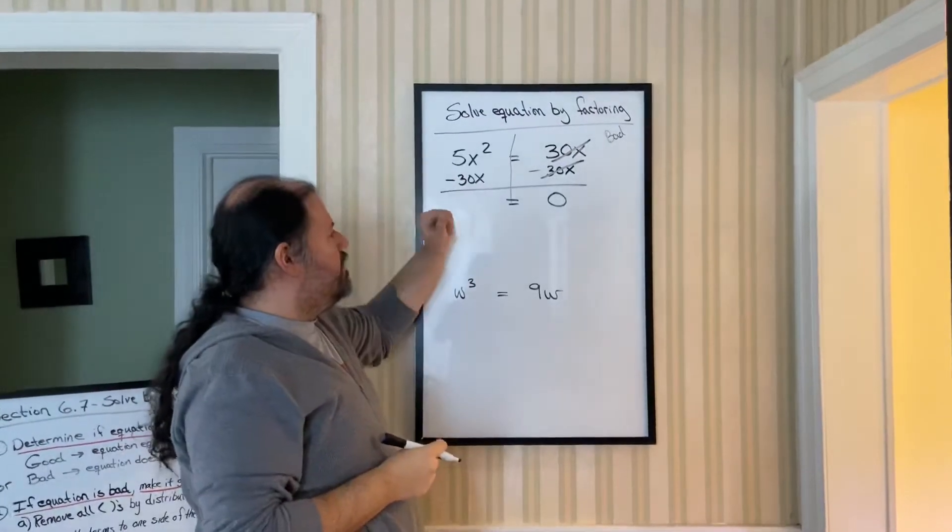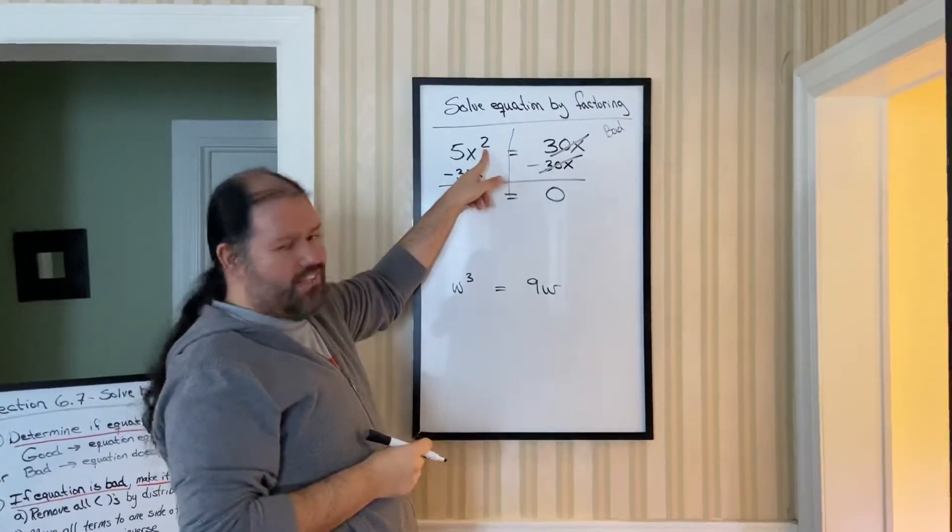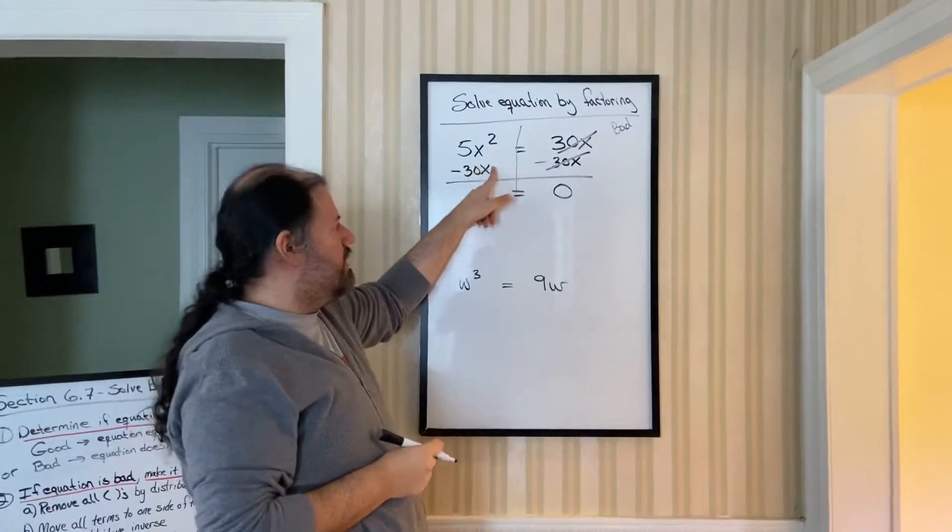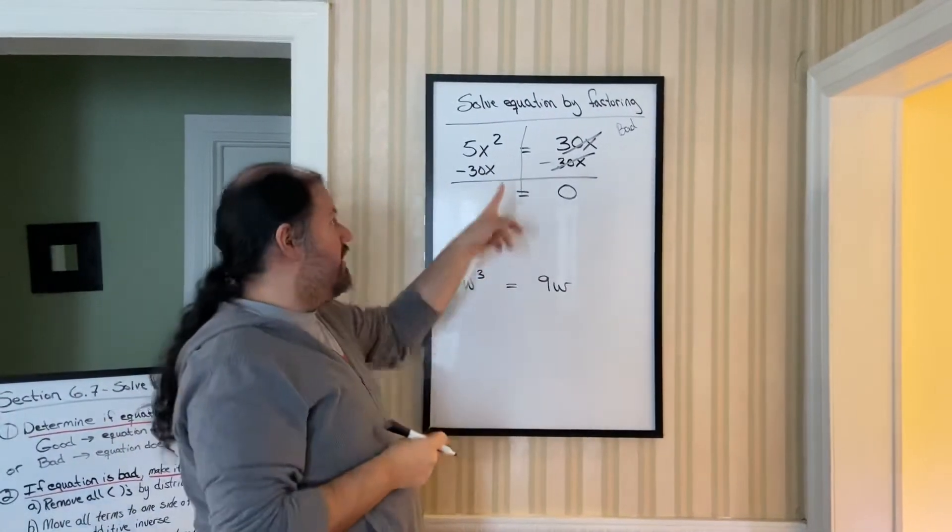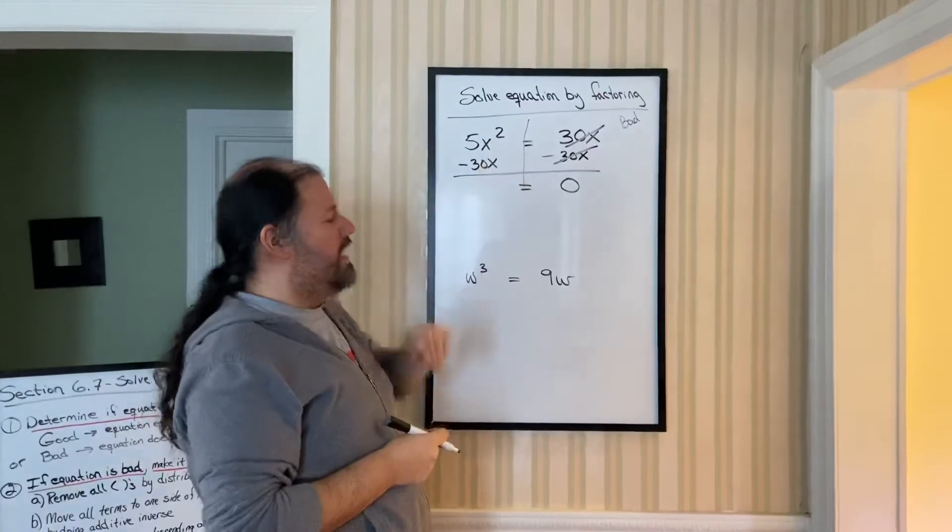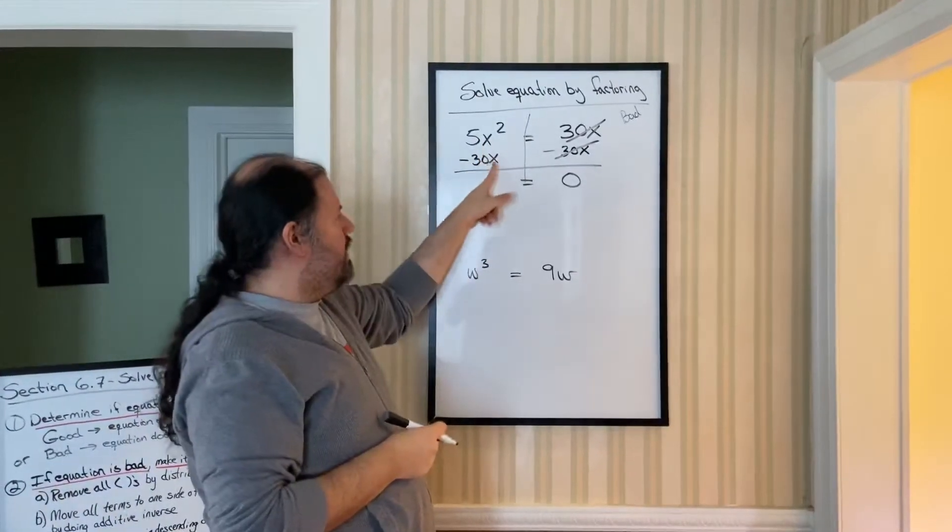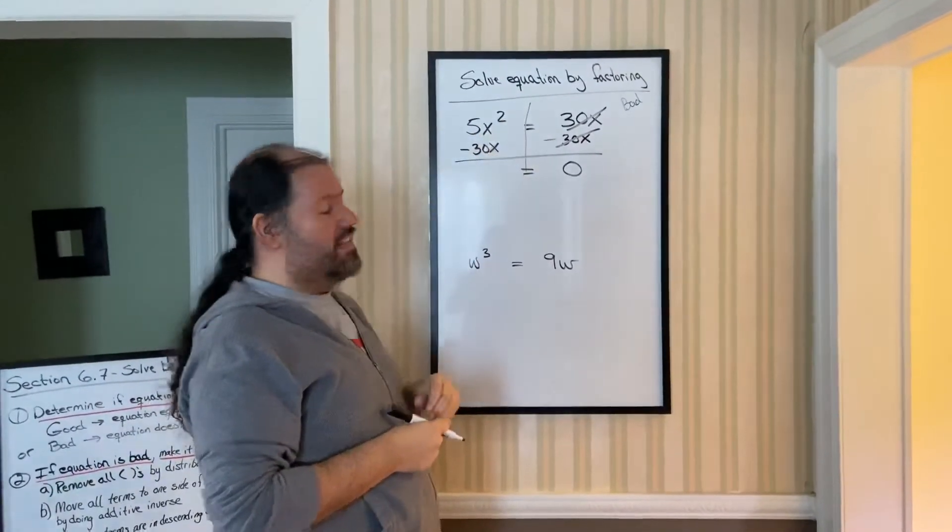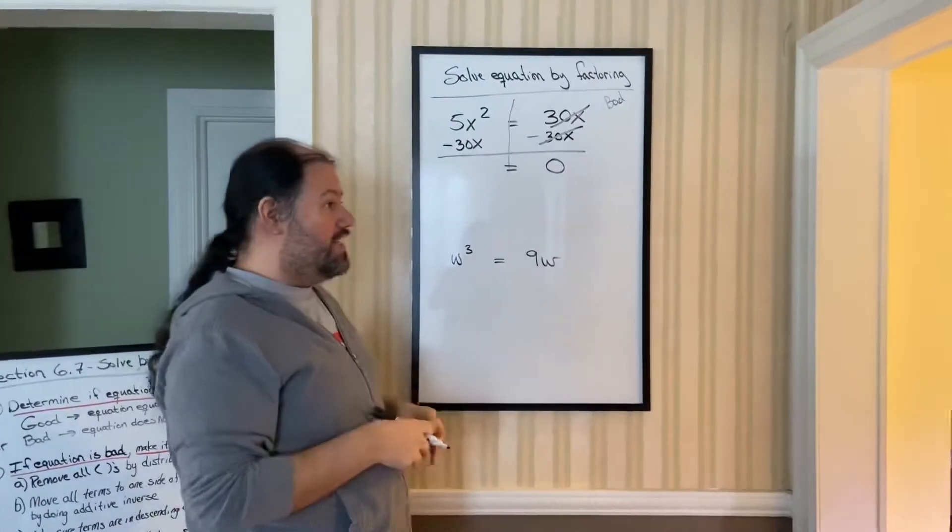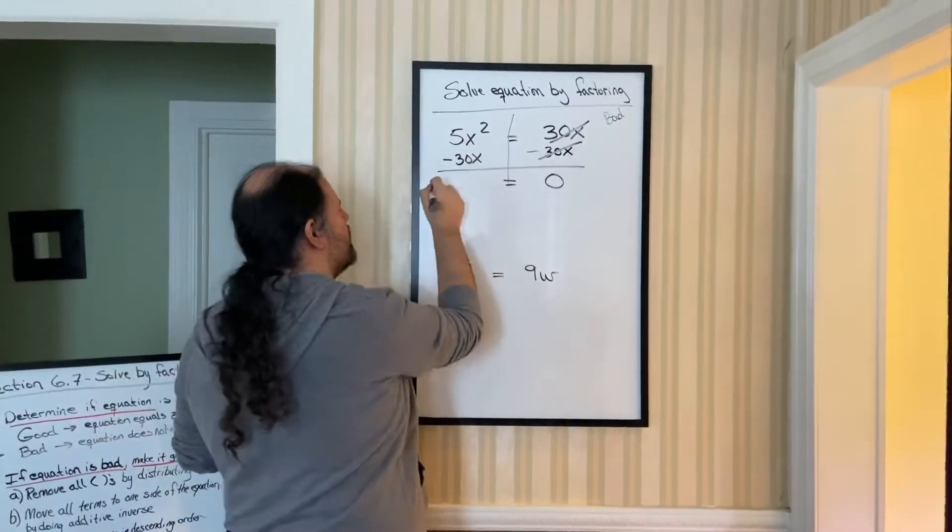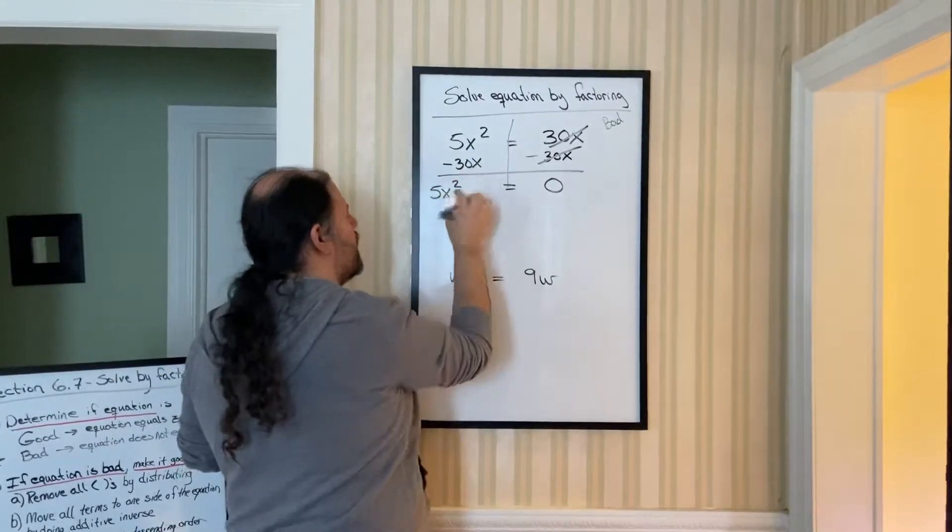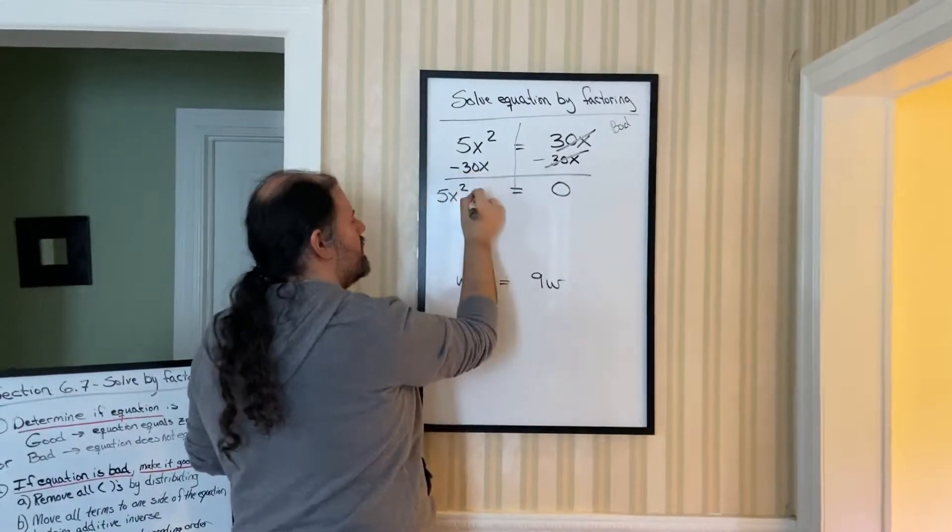Be careful here. We talked about this before. Something that's an x squared, something that's a plain x, they're not like terms. Like terms have to have the same exponents. Not just the same letters, but the same exponents. Since one's a squared and one's not, you're going to keep them separate. Put this first, highest degree, and then this.